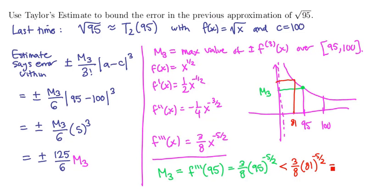But I can take a square root of 81 to get 9. So this is 3 eighths, 1 over 9 to the fifth power. Now if we bust that out on the calculator, that would be 3 eighths times 1 over the value 59049. And so if we multiply everything through, we're going to get 3 over 8 times 59,049 is 472,392. And that's our overestimate for m3.